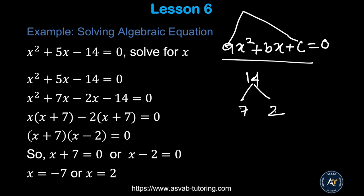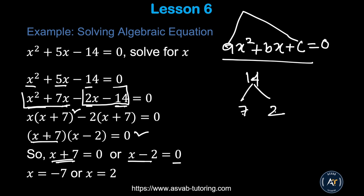For example: x² + 5x − 14 = 0. Multiply 1 by −14 to get −14; split into 7 and −2 (7 × −2 = −14, 7 + (−2) = 5). Rewrite as x² + 7x − 2x − 14, factor by grouping to get (x + 7)(x − 2) = 0. So x + 7 = 0 or x − 2 = 0, giving x = −7 or x = 2.